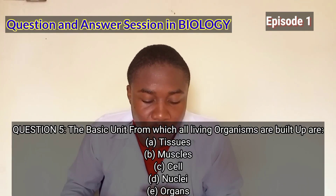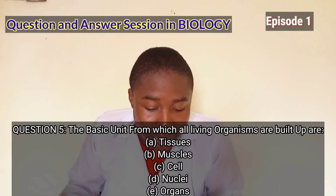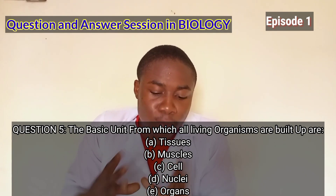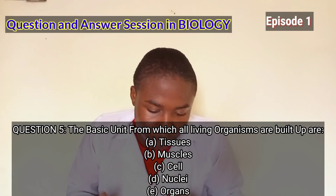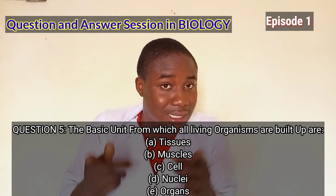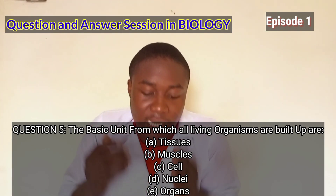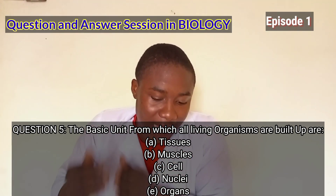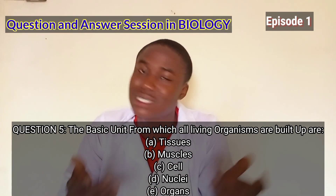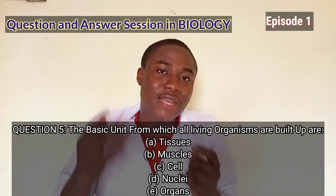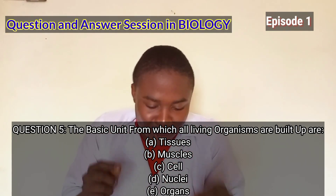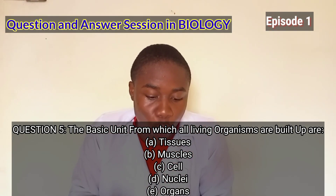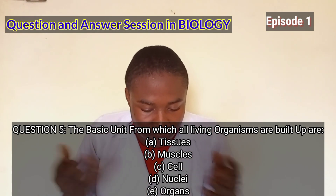The next question: the basic unit from which all living organisms are built up are — option A, tissues; option B, muscle; option C, cell; option D, nucleolus; option E, organs. The basic functional and structural unit of life is called the cell, so the answer is option C, the cell.